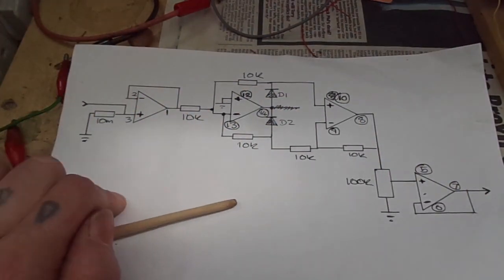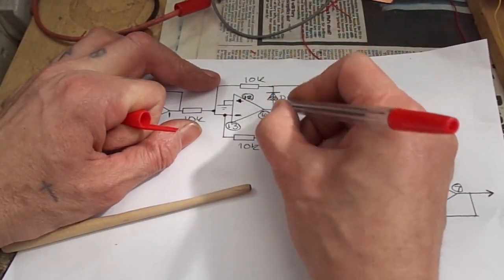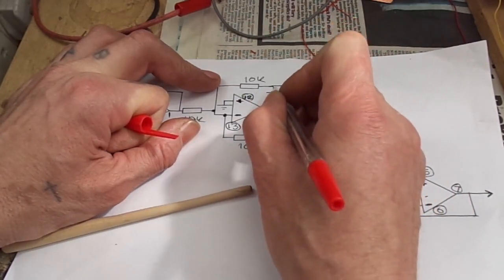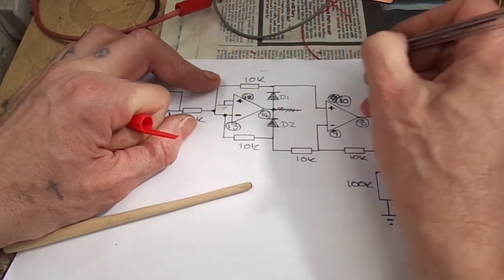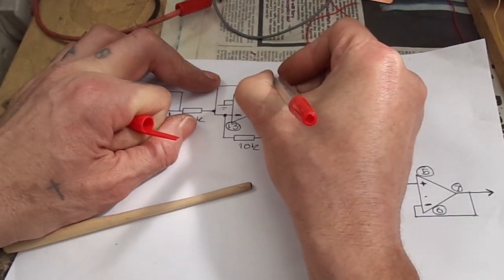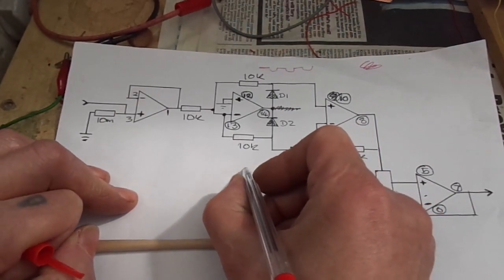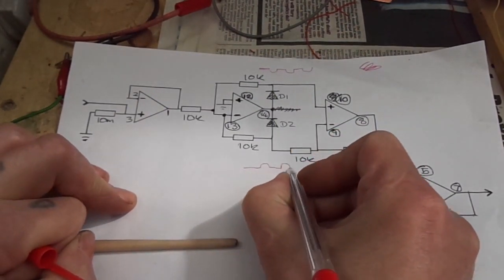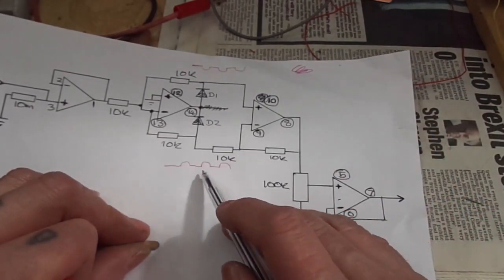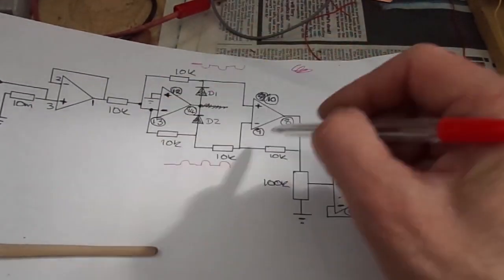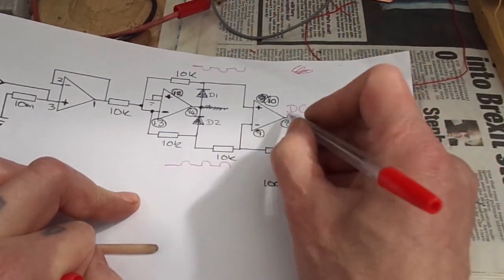So the signal comes in here, non inverted through this first stage and then comes in here and then these two diodes here basically rectify it. And because this is an inverting stage, what you get here - you would think we'd get a positive going waveform here, but we don't because it's an inverting stage. So what we get is something like that on this side and then on this side we get the opposite, a positive going waveform like that.